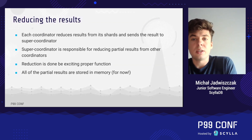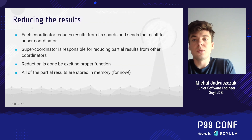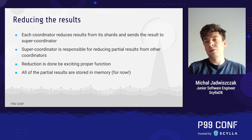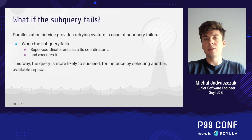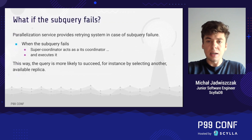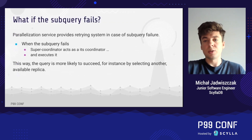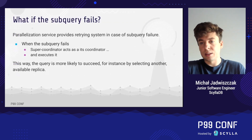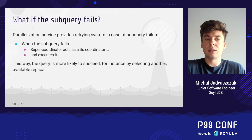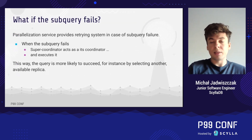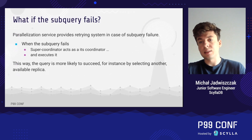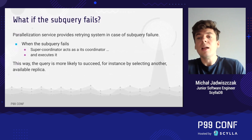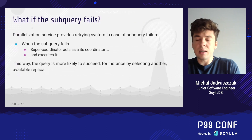Each node is responsible for merging the results from its shards, and the super coordinator is responsible for merging results from the other nodes. The reduction process is straightforward — it is simply the execution of the reduce function inside Scylla. Currently we store results in memory because we don't yet support the GROUP BY clause, so all results are just one row.